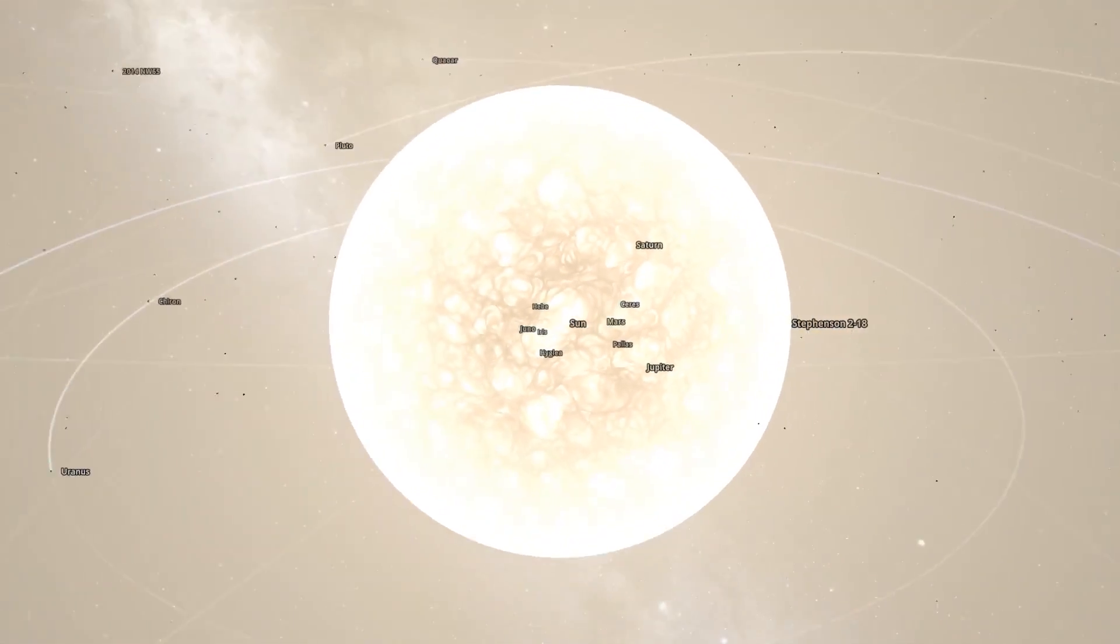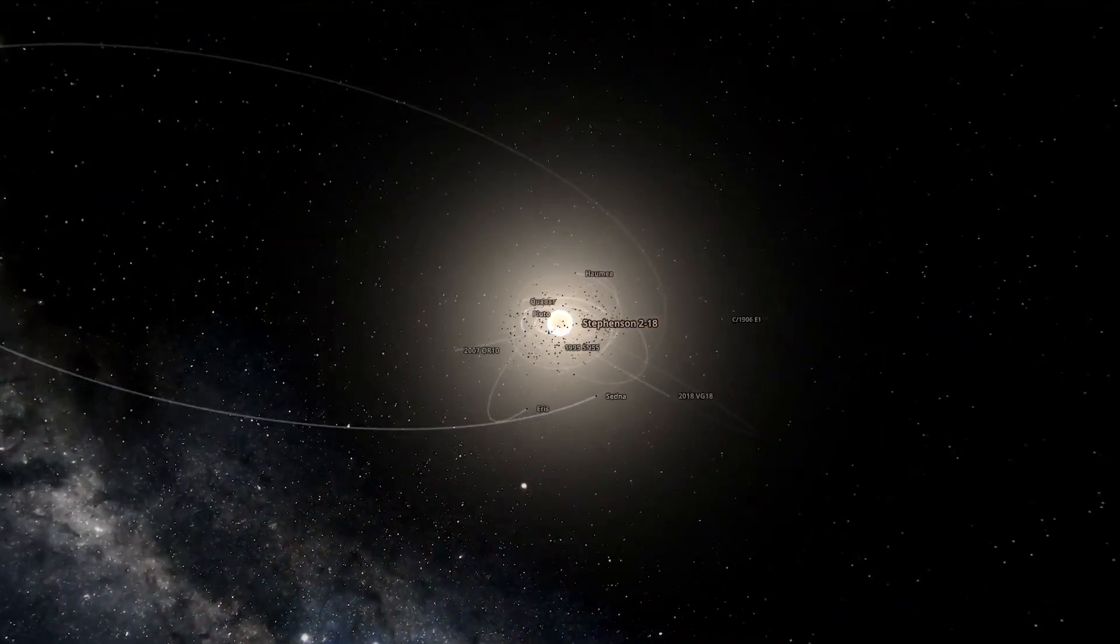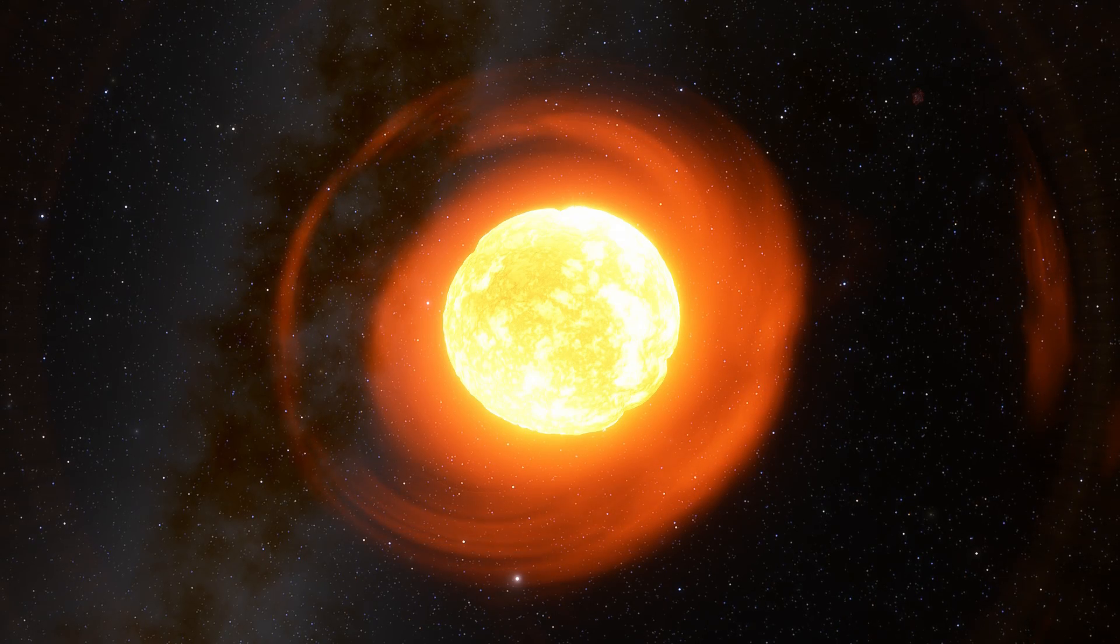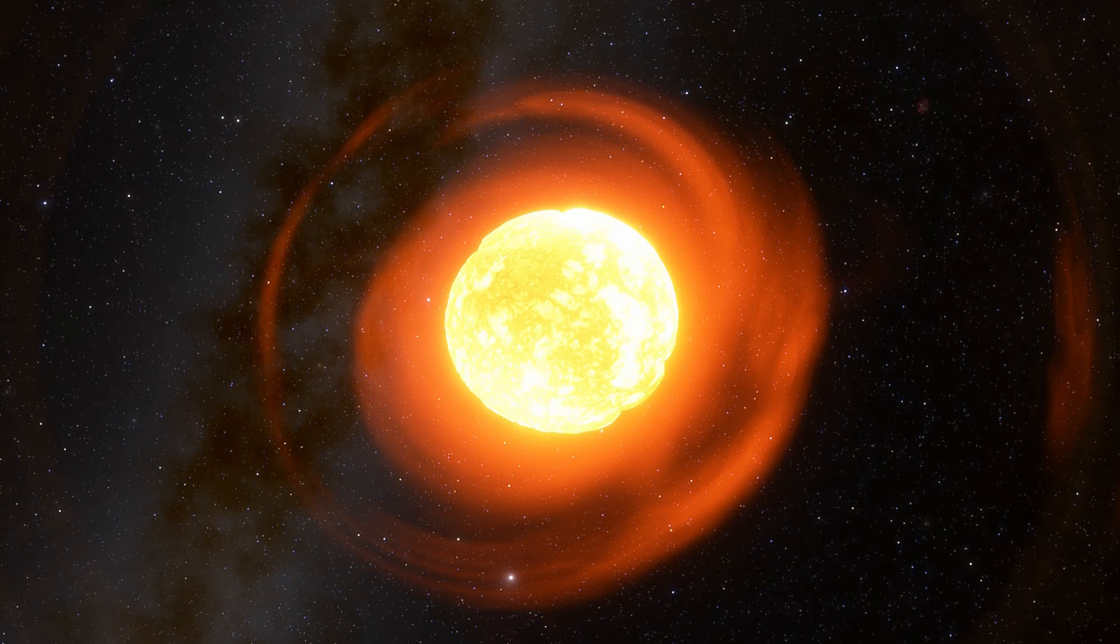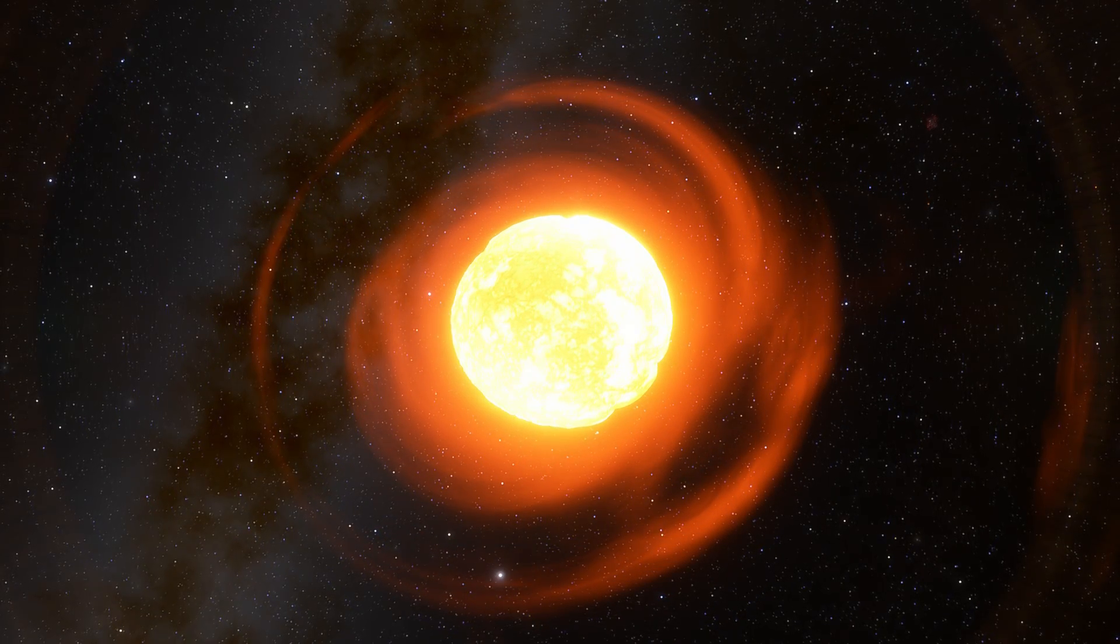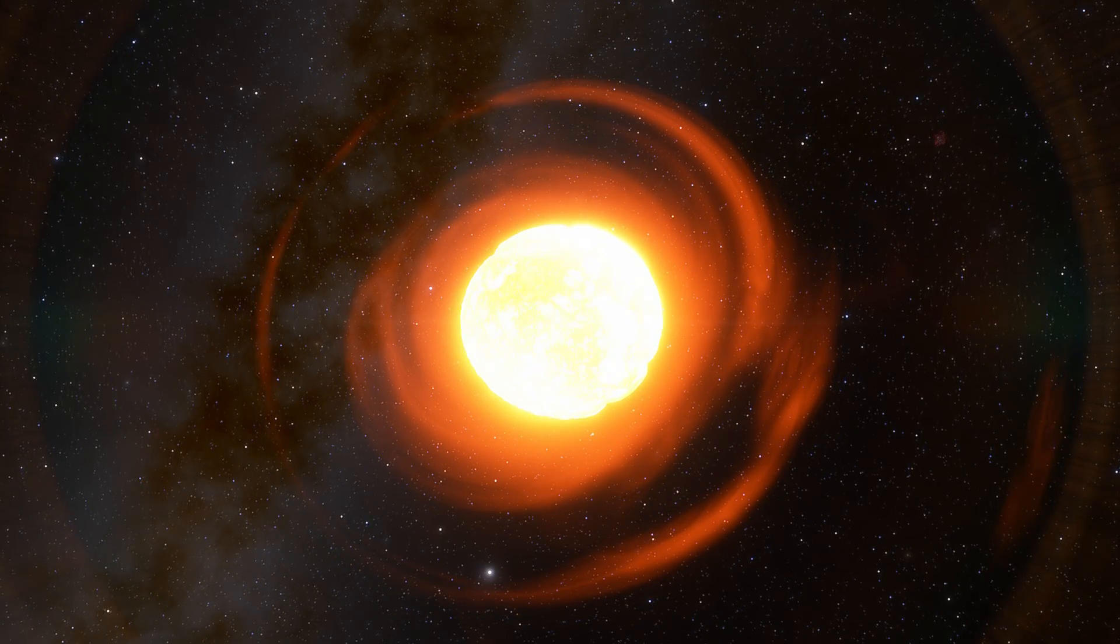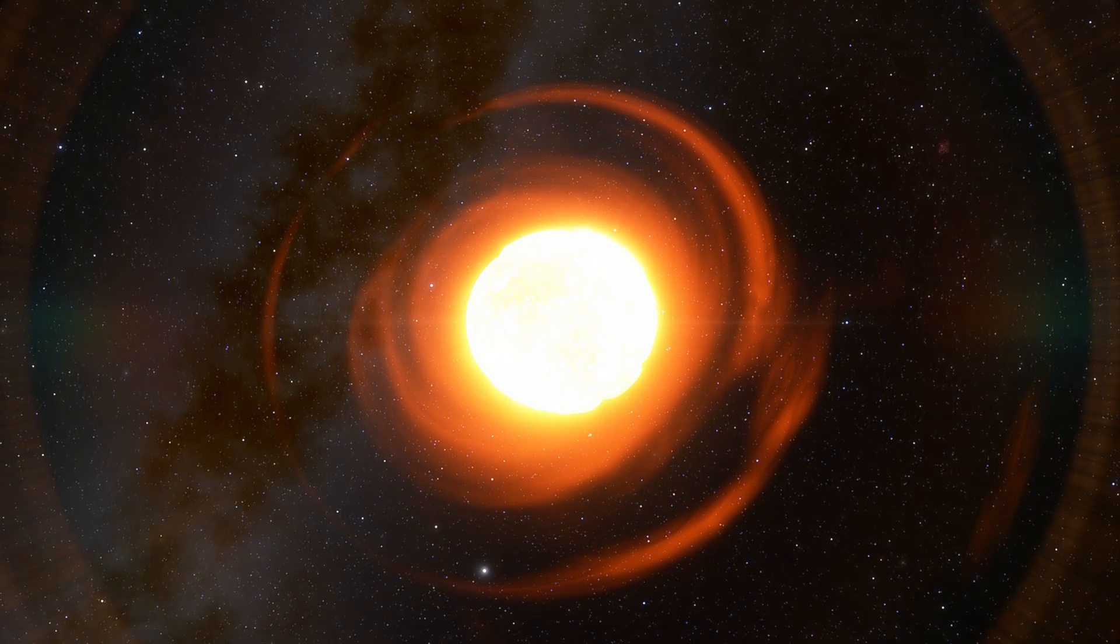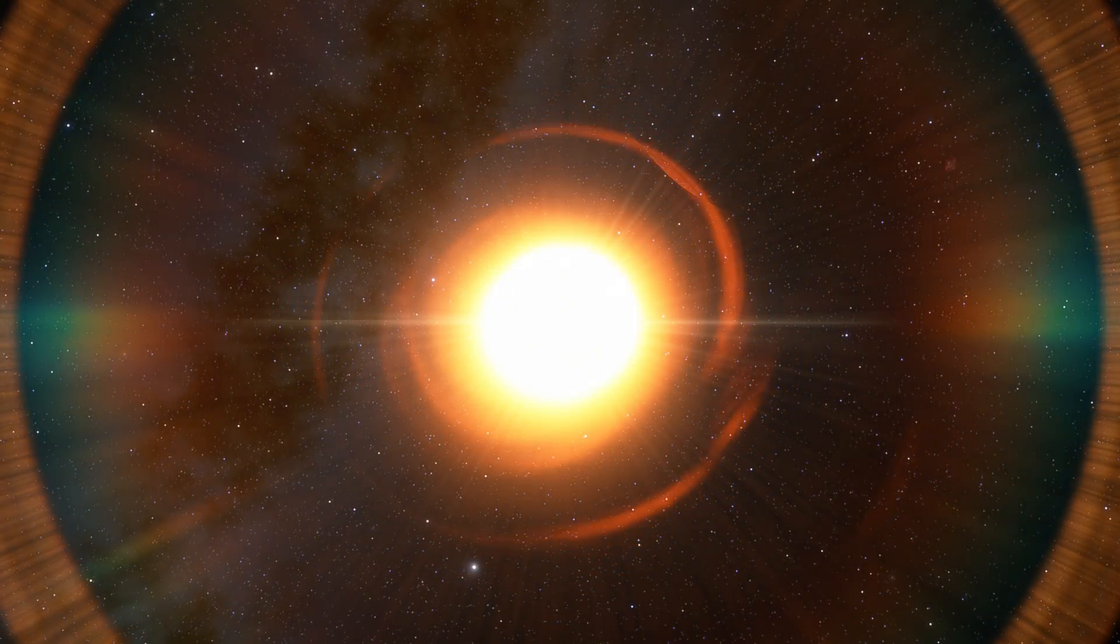It's so large that light traveling at 299,792 kilometers per second would take hours to cross from one side to the other. This immense size isn't just impressive, it tells the story of a star at a unique stage in its life, on the brink of death, ready to end its life in a spectacular supernova. Comparing our sun to ST 218, our home star could seem like a drop of water next to an ocean.